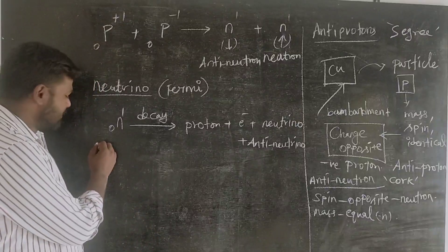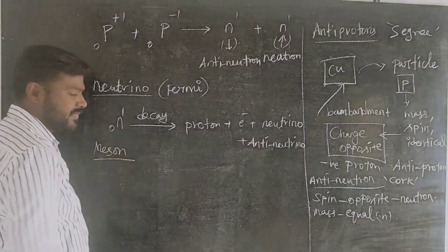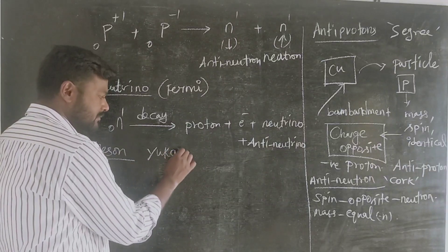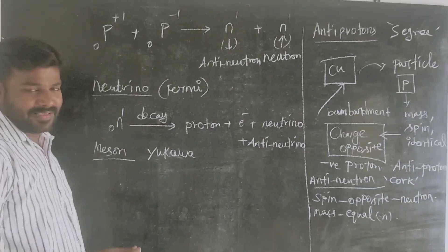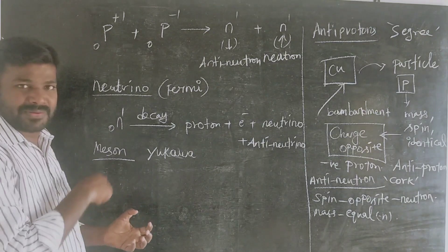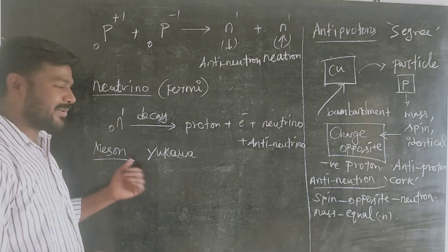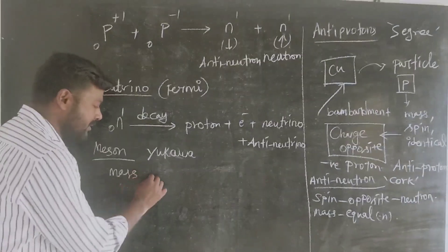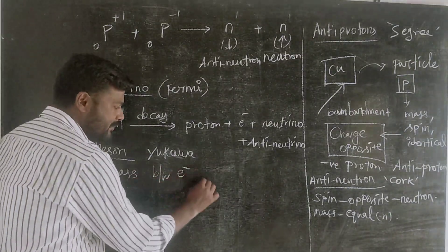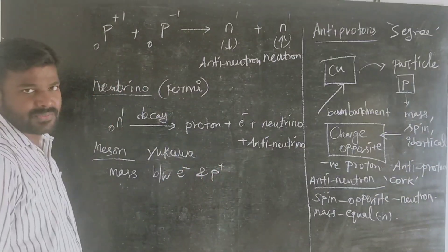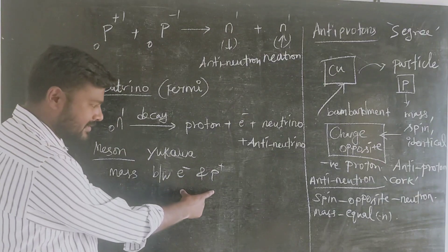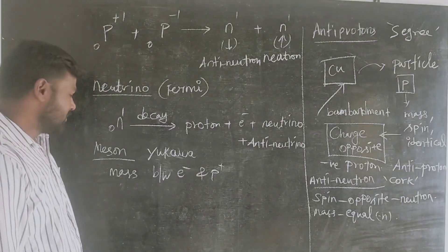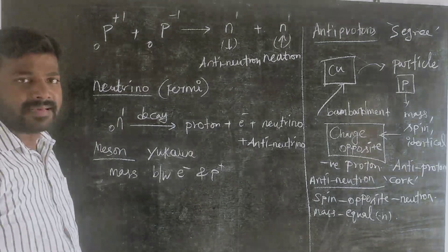The second particle is the meson. Meson is named after Japanese scientist Yukawa. In Japan, you can see atoms and nuclear reactions. The scientist Yukawa proposed the meson, and the mass is between that of the electron and the proton. Meson has three types.